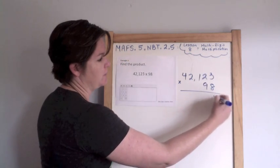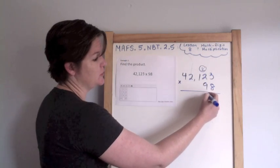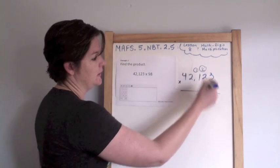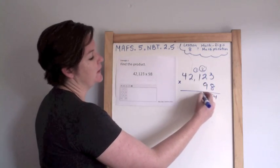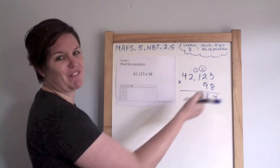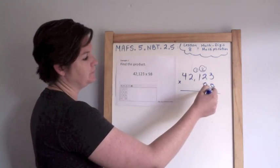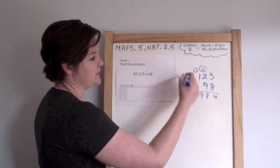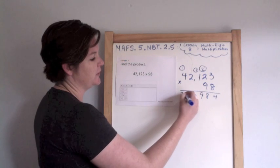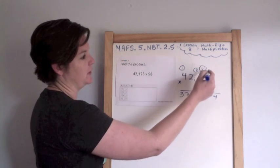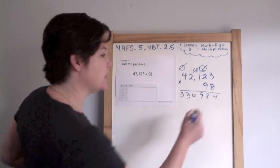8 times 3 is 24. 8 times 2 is 16, plus 2 is 18. 8 times 1 is 8, plus 1 is 9. And why do I circle it? So I don't forget to cross it out later. That's why I circle the little numbers up there. 8 times 2 is 16. Circle it. 8 times 4 is 32, plus 1 is 33. Woo! This is a big number. Cross it out. Cross it out. Cross it out. Now cross it out. Now cross it out.